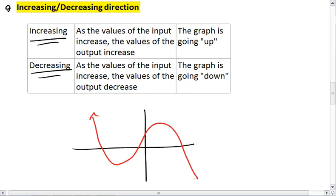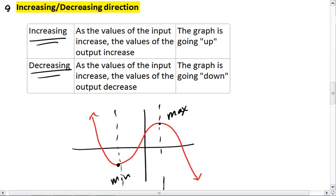For example, here we see that we have a local min and a local max. Your minimum and your maximum points divide your graph into increasing and decreasing sections. So for the first part, we're decreasing, then we increase, and then we decrease again.